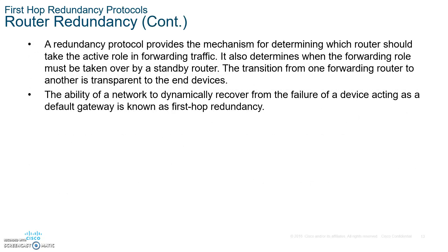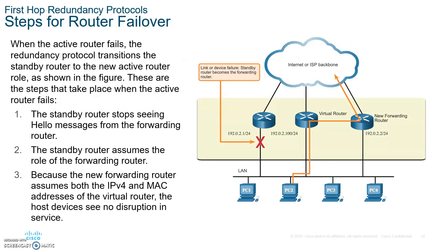Number five: HSRP allows one of the multiple routers to be active while the others are on standby. So all three routers together form one virtual router with one virtual IP address. The PCs are configured to use the virtual router as their default gateway. When traffic comes in, HSRP sends it to the active router to be routed.